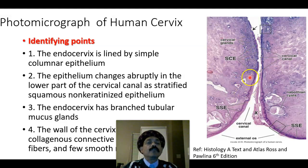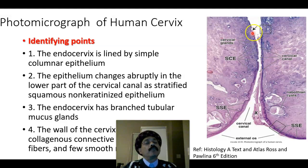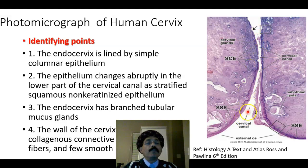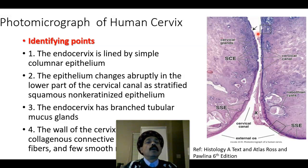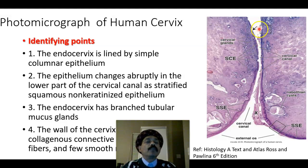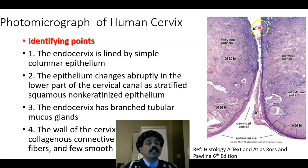The endocervix has branched tubular mucous glands — these are the cervical glands. These glands have many functions, especially lubrication of the vagina. The cervical gland secretion changes during the menstrual cycle: before ovulation or at ovulation it is very thin, permitting the passage of semen into the body of the uterus. In the luteal phase, or second half of the menstrual cycle, the mucus becomes thick, so spermatozoa or infection cannot easily enter.